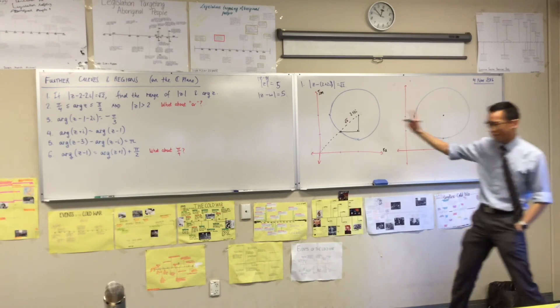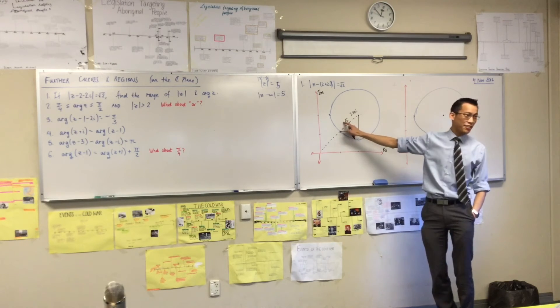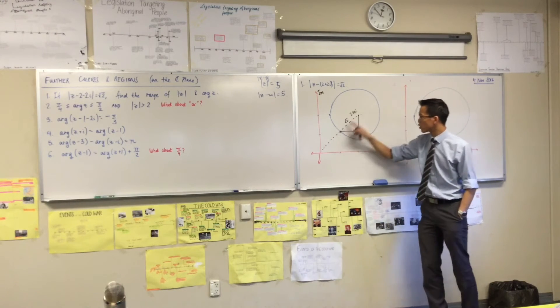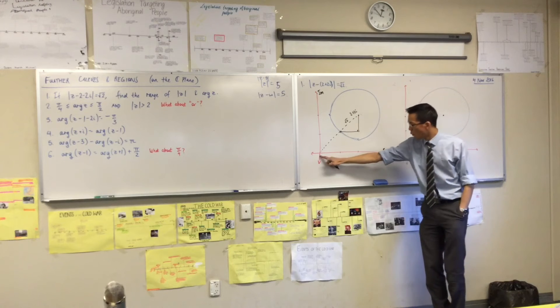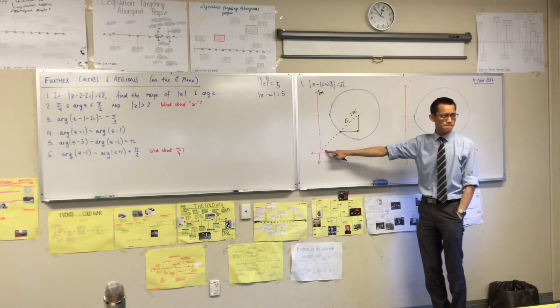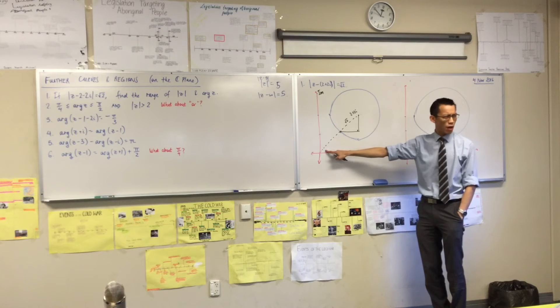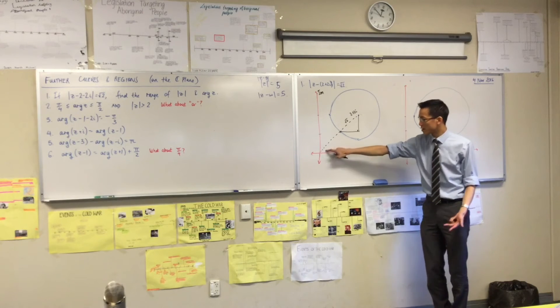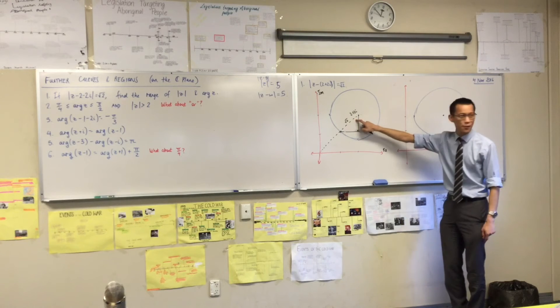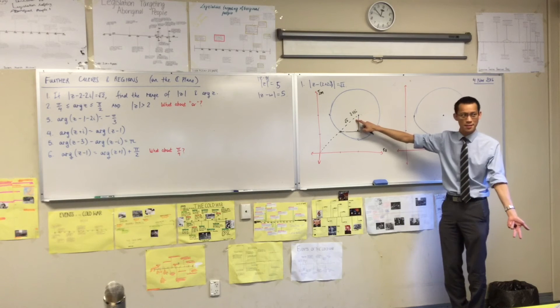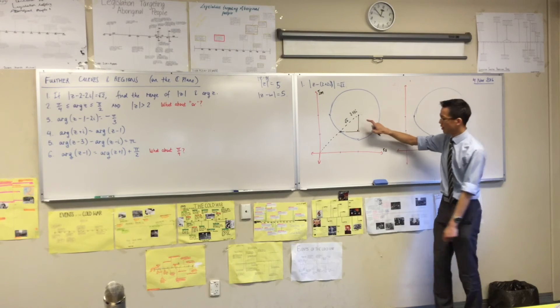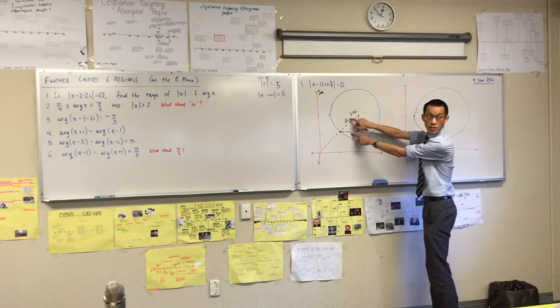So, if this angle over here, sorry, this hypotenuse over here is root 2, and keep in mind, like 2 plus 2i, 2 plus 2i. What is the argument of 2 plus 2i, this angle in here? This is pi on 4, 45 degrees, isn't it? If that's pi on 4, then that's pi on 4. If that's pi on 4, that's pi on 4. So, what kind of a triangle is this? It's not just right angle, it's also isosceles. So, these two sides are the same. Something squared plus something squared will be that squared.